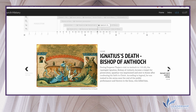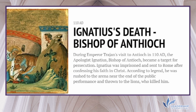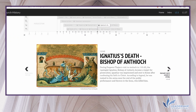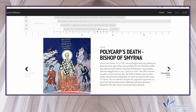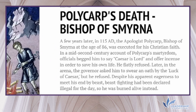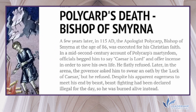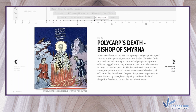During Emperor Trajan's visit to Antioch in 110 AD, the apologist Ignatius, Bishop of Antioch, became a target for persecution. He was imprisoned and sent to Rome after confessing his faith in Christ; according to legend, he was thrown to the lions in the arena. A few years later, in 115 AD, the apologist Polycarp, Bishop of Smyrna, was executed for his Christian faith at the age of 86. Officials begged him to say 'Caesar is Lord' to save his life, but he flatly refused. The governor asked him to swear by the luck of Caesar, but he refused again. As beast-fighting had been declared illegal for the day, he was burned alive instead.